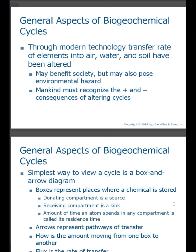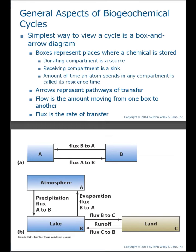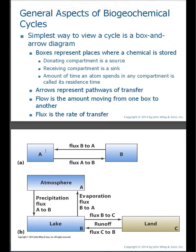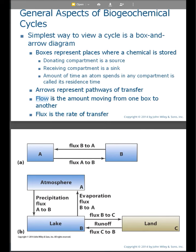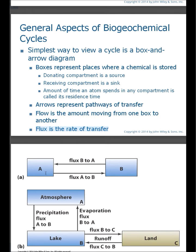We must recognize the positives and negatives of changing the biogeochemical cycle. There is this box and arrow diagram, which is a simple visual representation of how elements cycle in and out of the different spheres. The boxes are places where the chemical is stored. Flux is the rate of transfer — the flow is the amount moving from one box to another. In this example using nitrogen: from reservoir A to earth system B, the rate of transfer is moving from A to B. A in this case is called the source because it's providing the nitrogen, and the receiving compartment, B, is called the sink. Box B can also contribute to box A, so these relationships can be reversed.